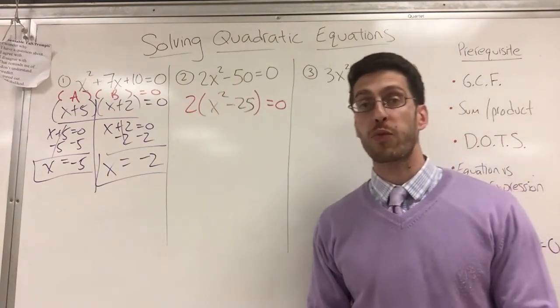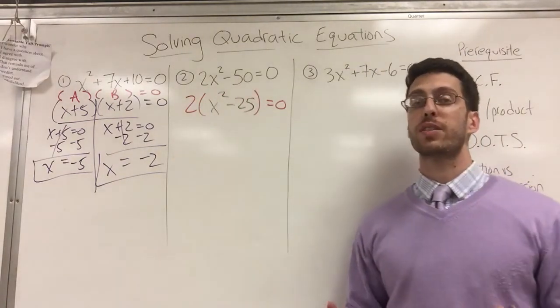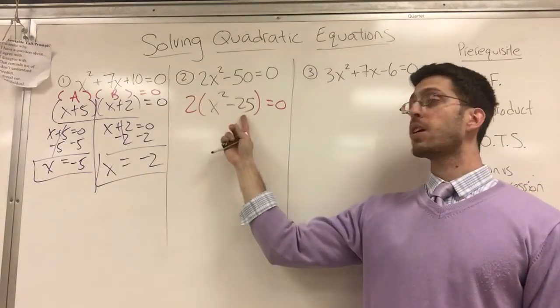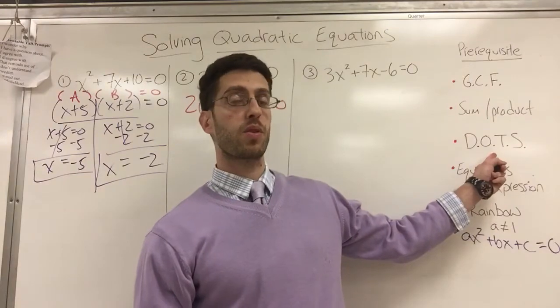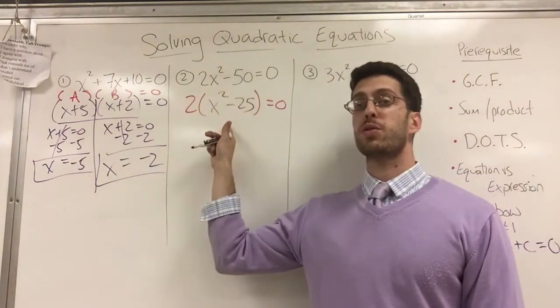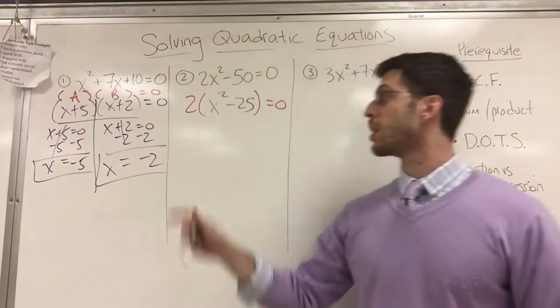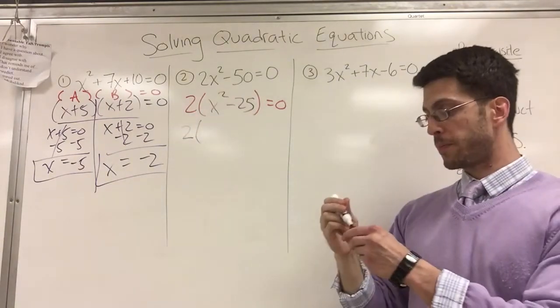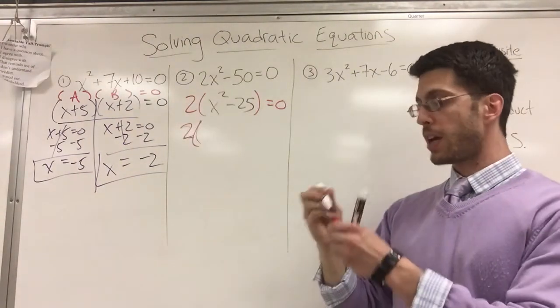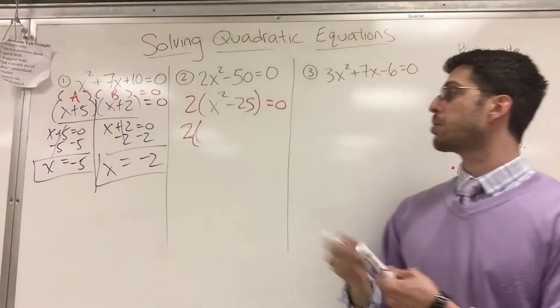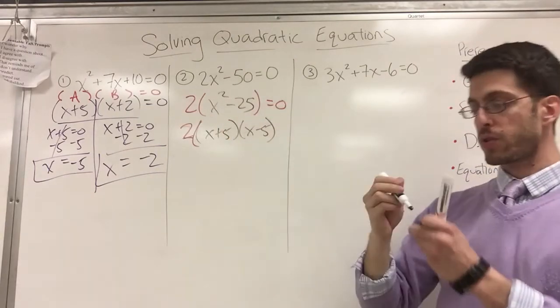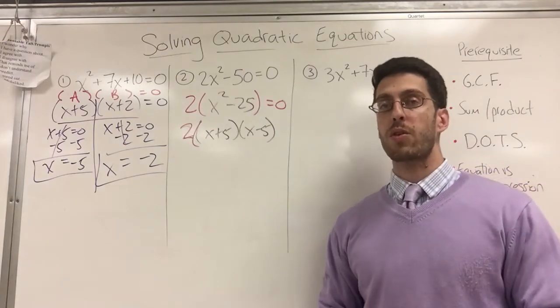Now, oh man, I got to go further. This is something called factor completely because this thing with ignoring the two, this thing looks very familiar. It looks like DOTS. So I'm giving you an example of every one of those. Difference of two squares. How do you factor a difference of two squares? You look for conjugates.